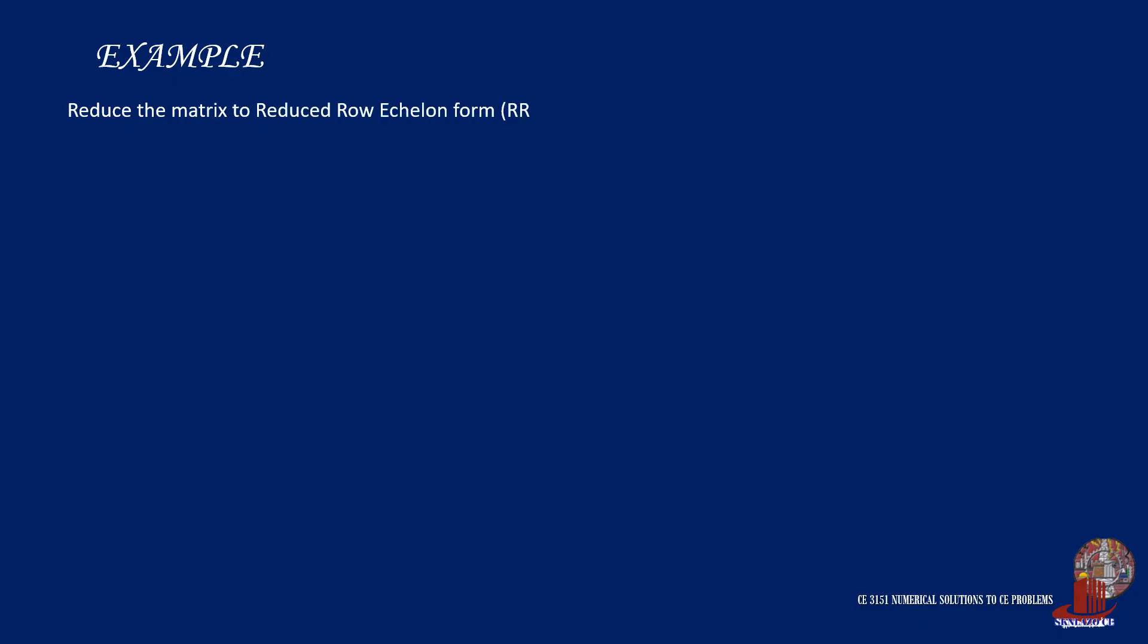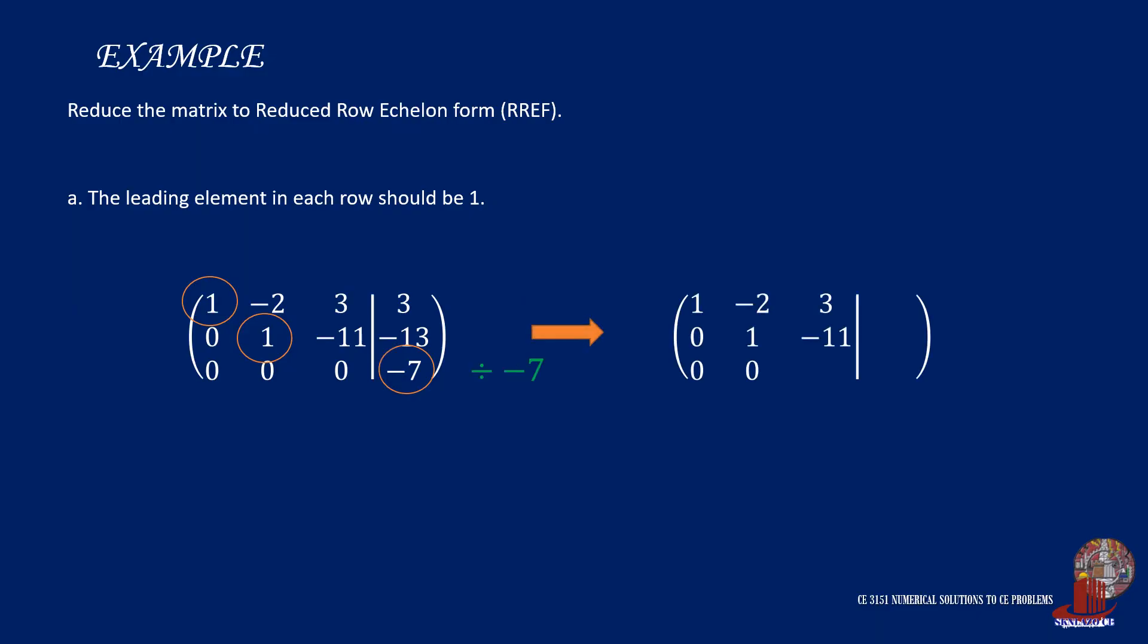One characteristic of the reduced row echelon form is to have the leading element in every row as 1. In the matrix, we need to divide the third row by negative 7 to come up with the leading element equal to 1.